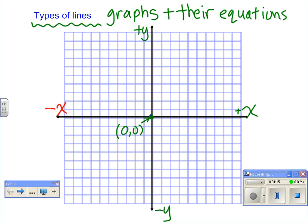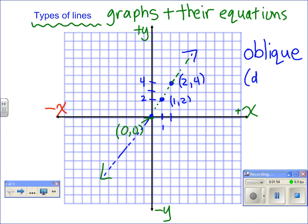So let's say we have a line which goes through (0, 0), and then it goes through (1, 2), and then it goes through (2, 4). Forever and ever that way. What type of line is it? Some people might call it a diagonal line. Our mathematical name for it is an oblique line.